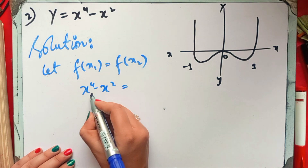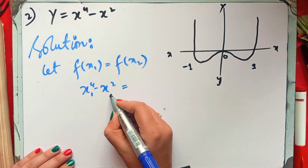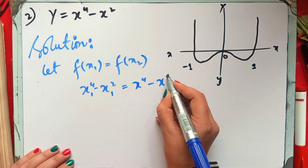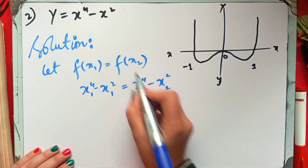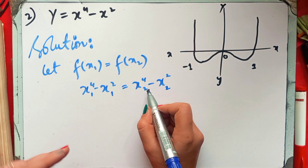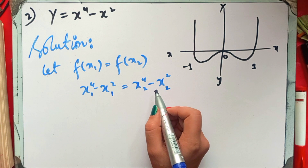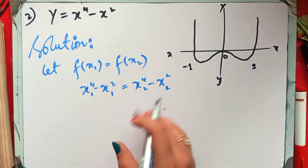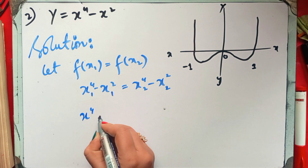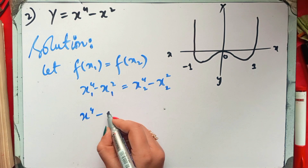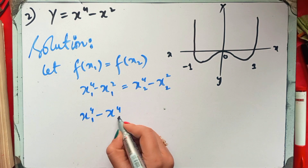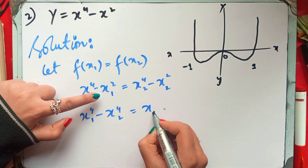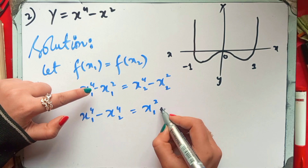We set f(x₁) = f(x₂), so x₁⁴ - x₁² = x₂⁴ - x₂². Rearranging, we group: x₁⁴ - x₂⁴ minus (x₁² - x₂²) equals zero. We can apply the difference of squares formula: a² - b² = (a+b)(a-b). So x₁⁴ - x₂⁴ becomes (x₁²)² - (x₂²)², giving us (x₁² + x₂²)(x₁² - x₂²) minus (x₁² - x₂²) equals zero.